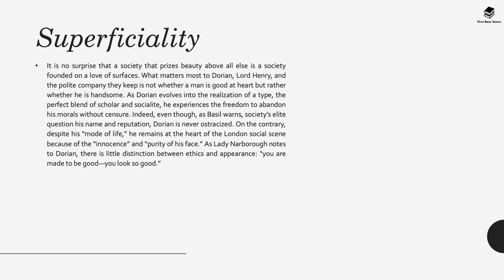The next theme of course is superficiality. It's no surprise that a society which prizes beauty above all else is a society founded on a love of surfaces. What matters most to Dorian, Lord Henry, and the polite company that they keep is not whether a man is good at heart, but rather if he's handsome. As Dorian evolves into the realisation of a type—the perfect blend of scholar and socialite—he experiences the freedom to abandon his morals without censure. Even though, as Basil warns, society's elite question his name and reputation, he's actually never ostracised. On the contrary, despite his mode of life, he remains at the heart of London's social scenes because of the innocence and purity of his beauty and face.